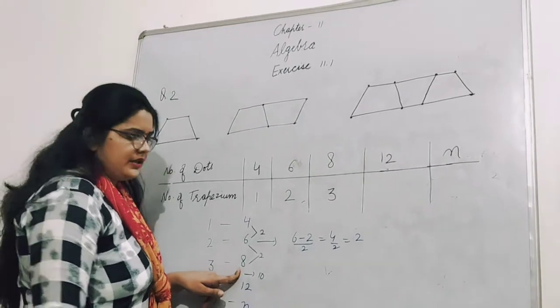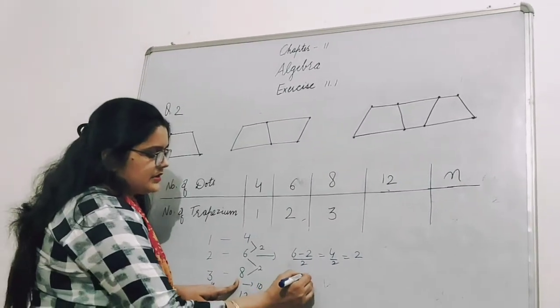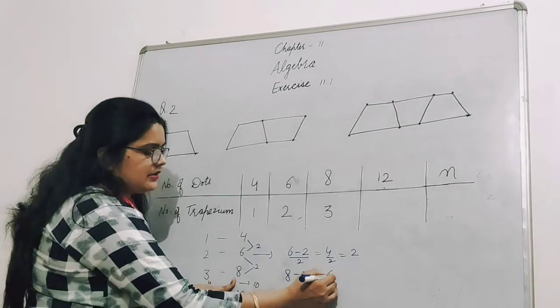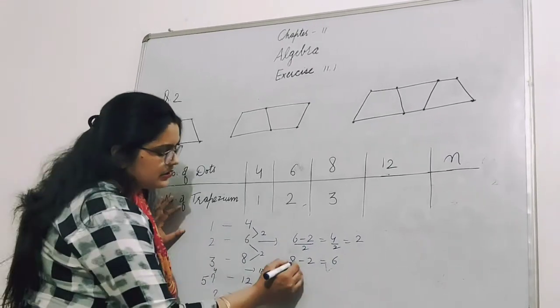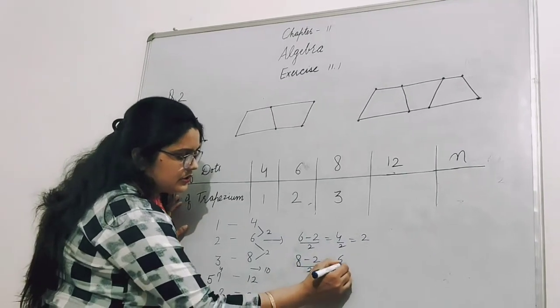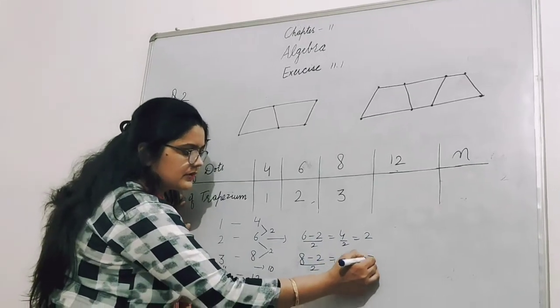Here we have 8 dots. If I minus 2 from 8, what will I get? 6. How many do I need to make? 3. If I divide this by 2, how many trapeziums will form? 3.